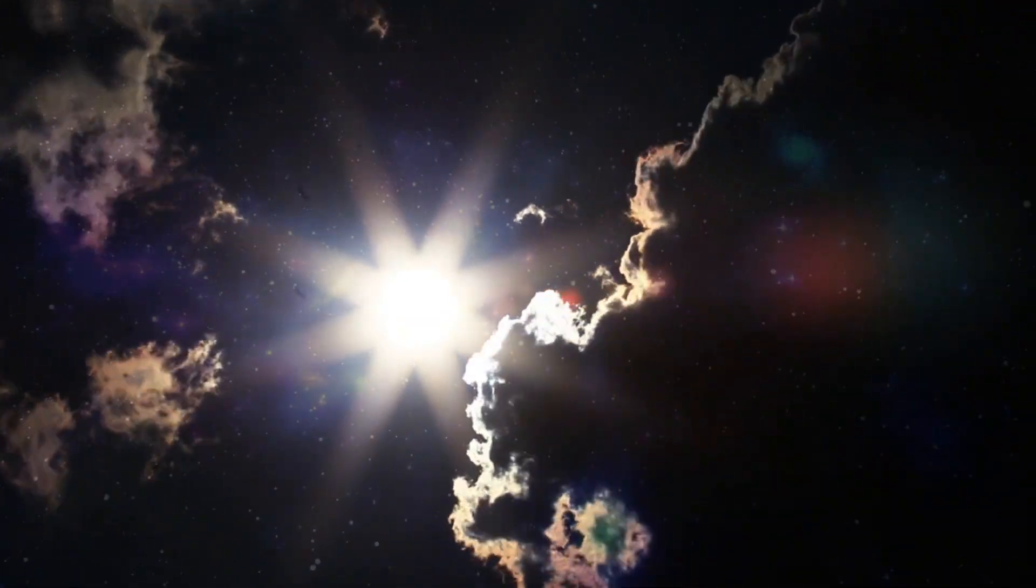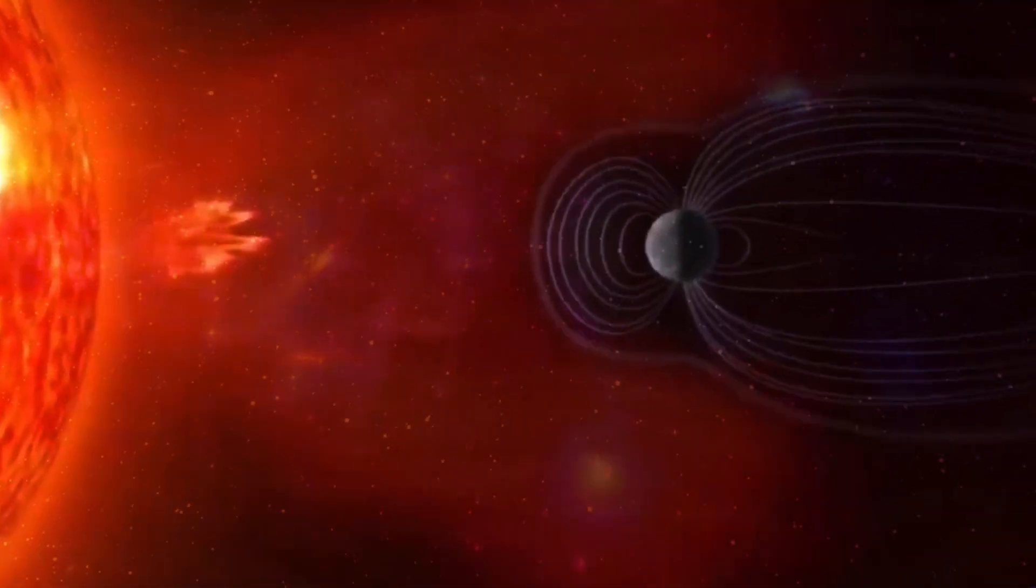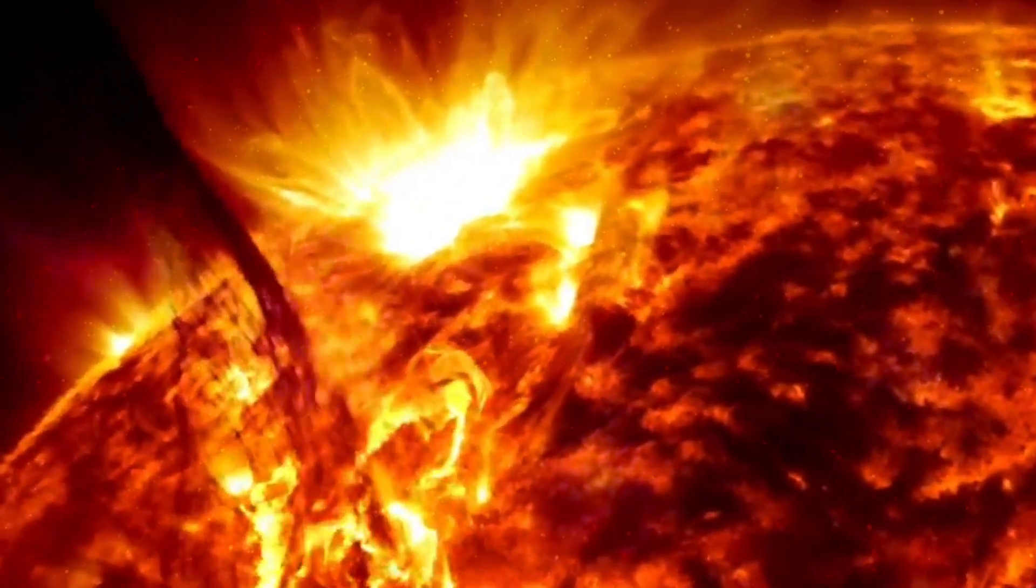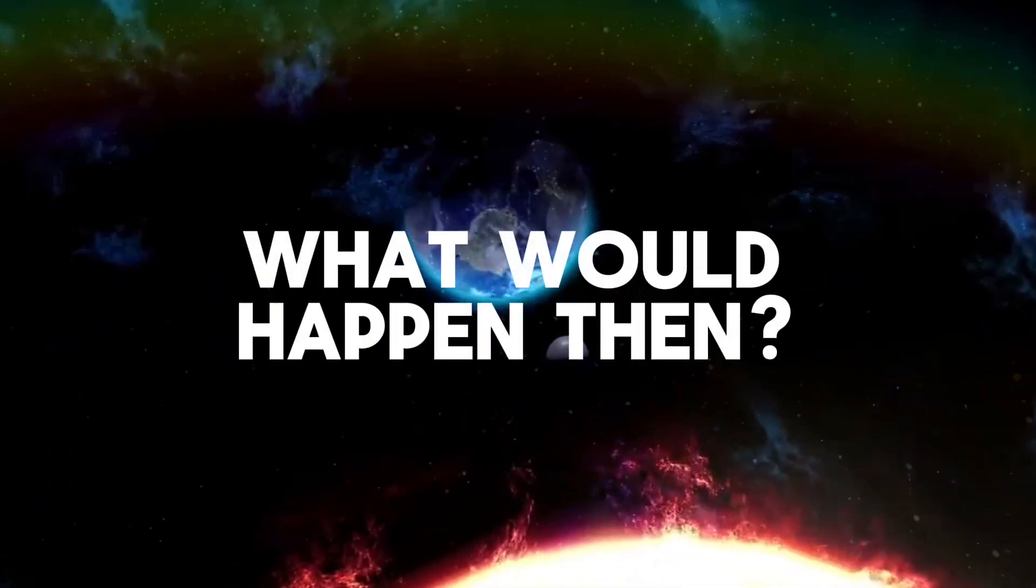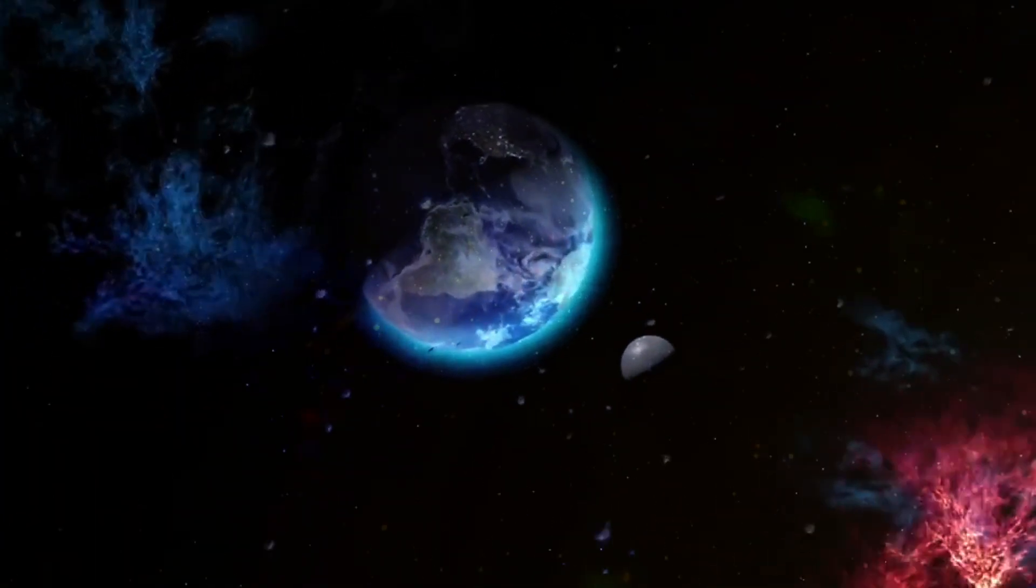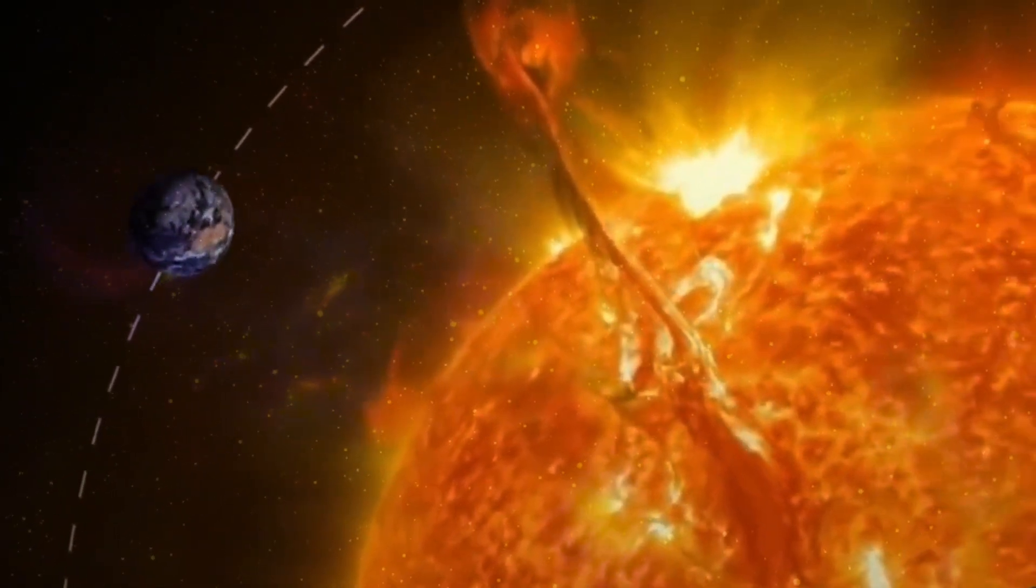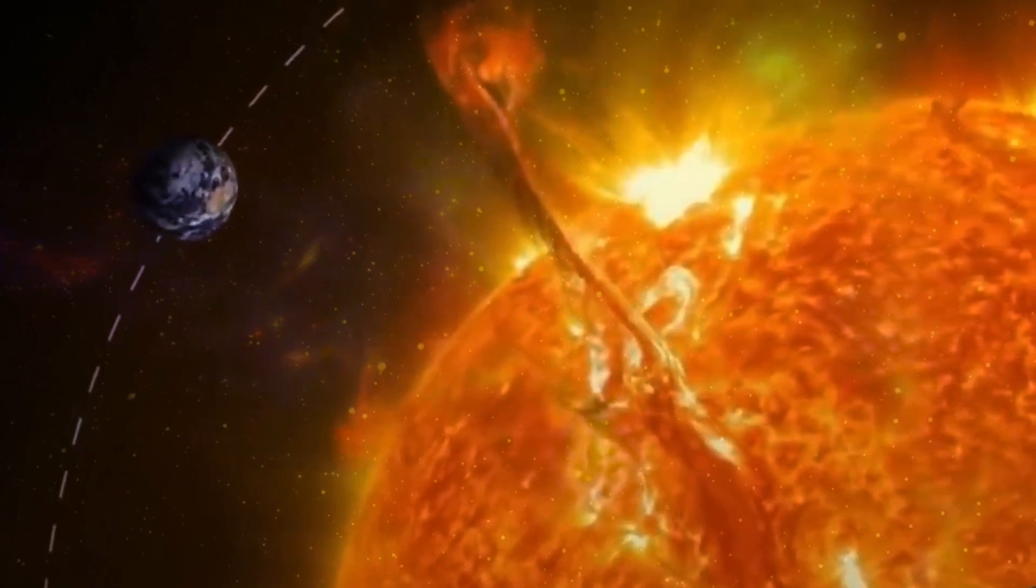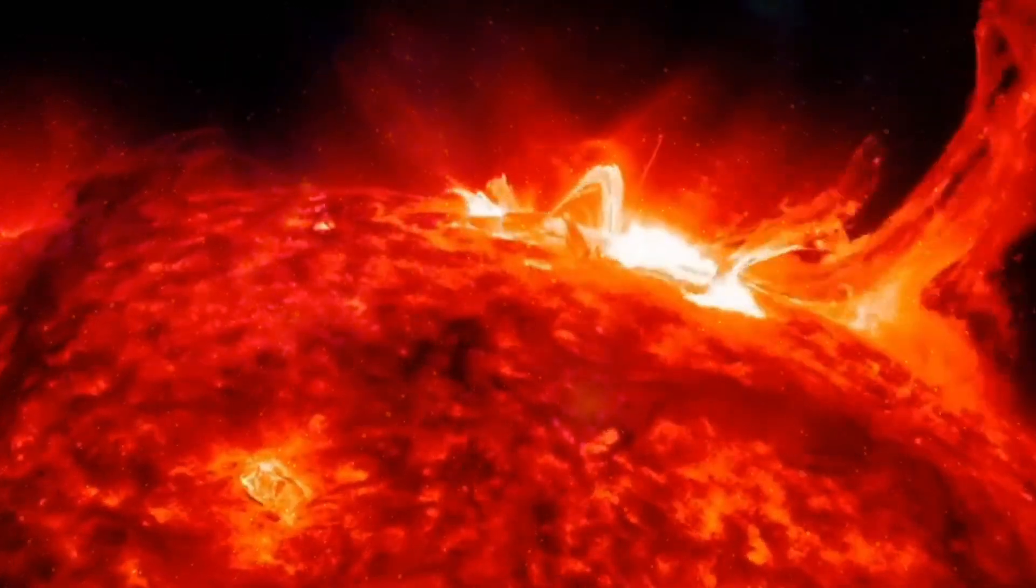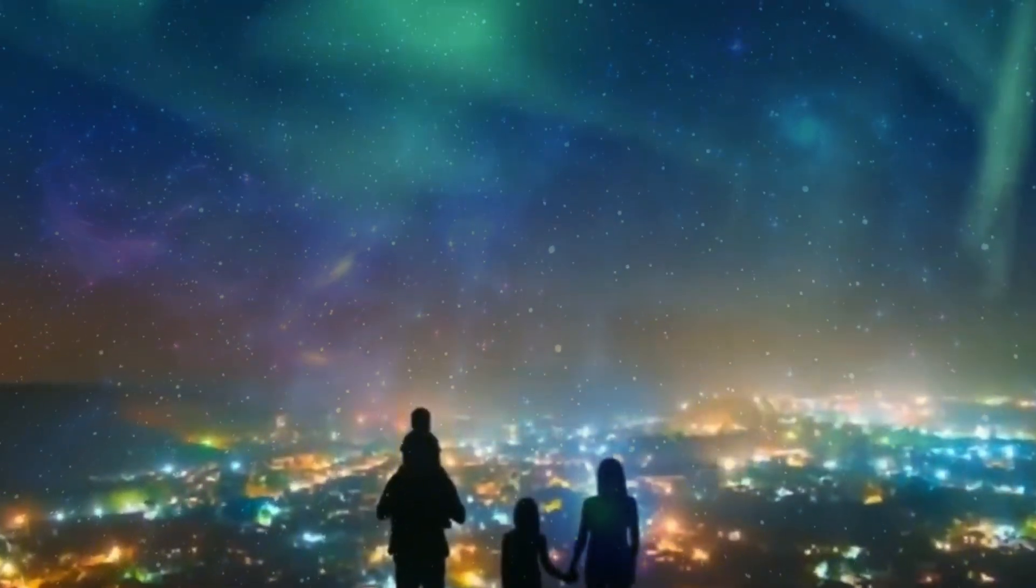Imagine the sun, our usually friendly neighborhood star, decides to send a massive solar flare our way, similar to or even bigger than the Carrington event of 1859. What would happen then? Solar flares, those dramatic bursts of energy and light from the sun, are visually stunning. But their beauty comes with a hidden danger. If one of these flares, accompanied by a coronal mass ejection, or CME, directly hits Earth, it sets off a series of potentially catastrophic events.